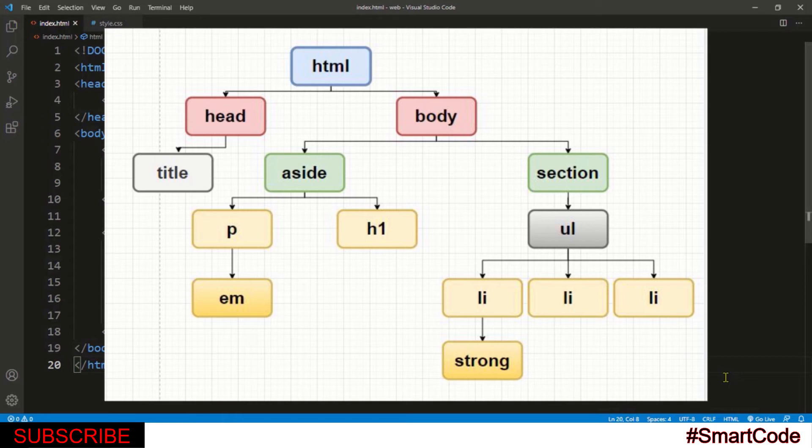Now let's try for the section part of the code and try to identify the parent and the children. Now here the section is the parent where the ul is the children and the ul has three more children, the three li tags. And one li has another child, a strong tag.